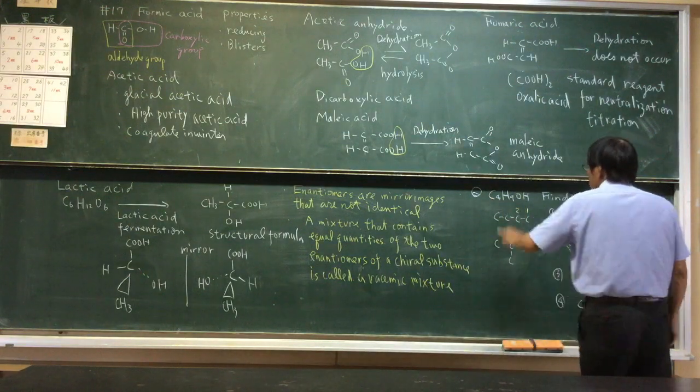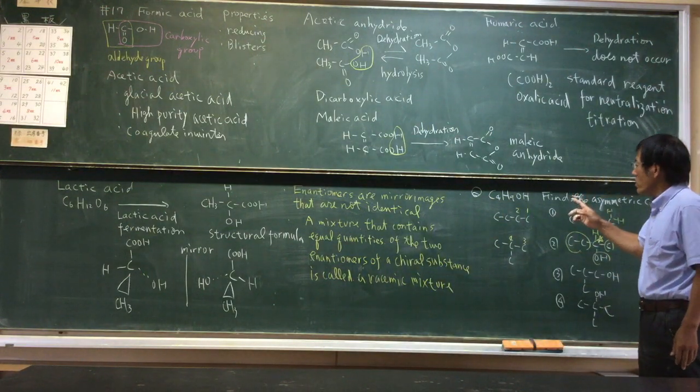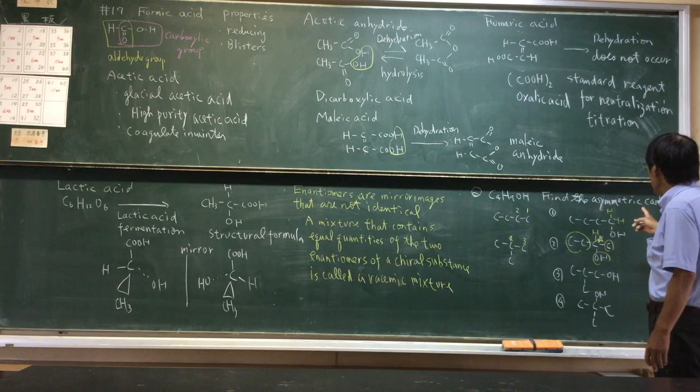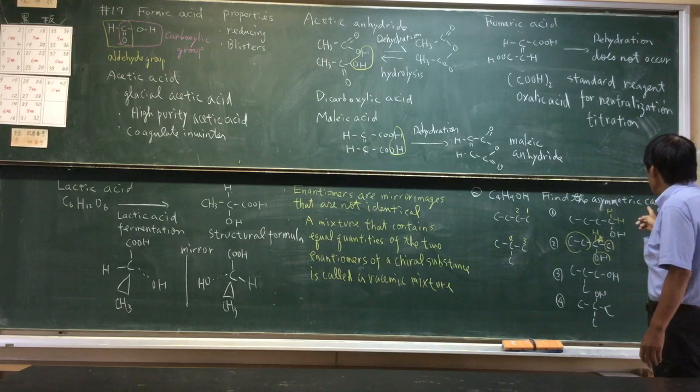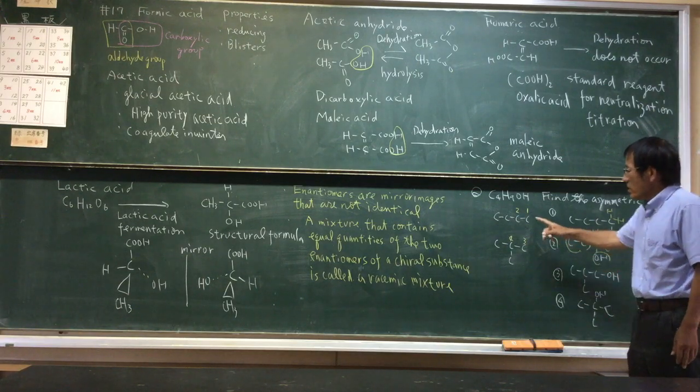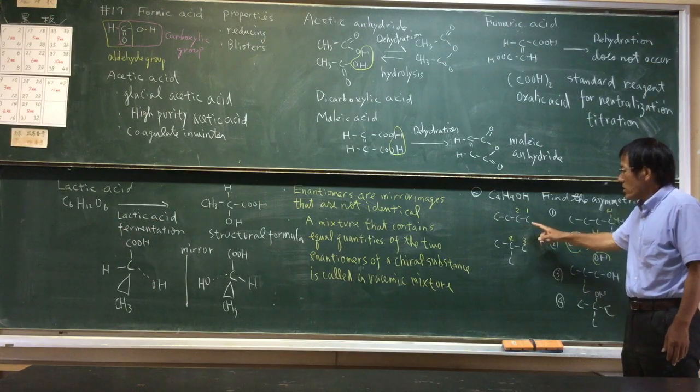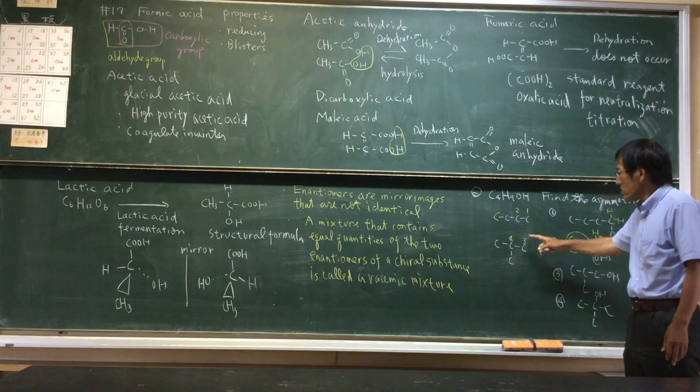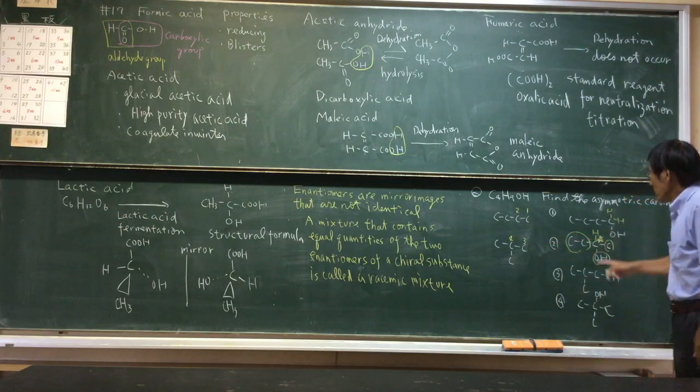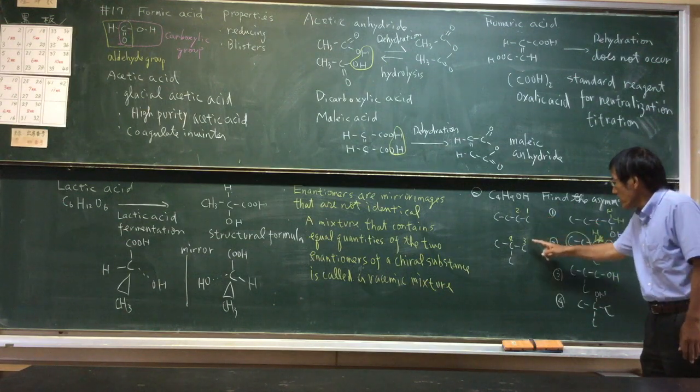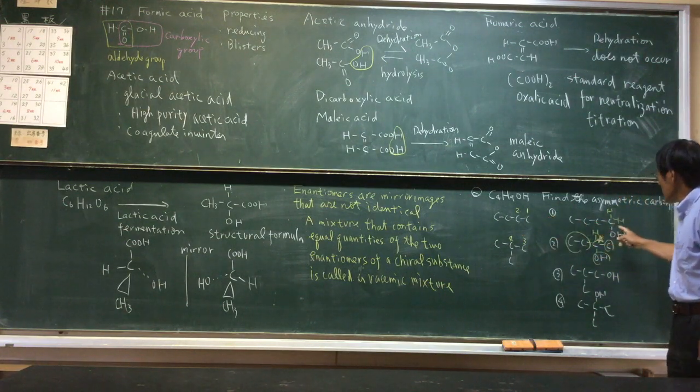Question: C4H9OH5, find the asymmetric carbon. We wrote a 4-carbon skeleton here: 1, 2, 3, 4.